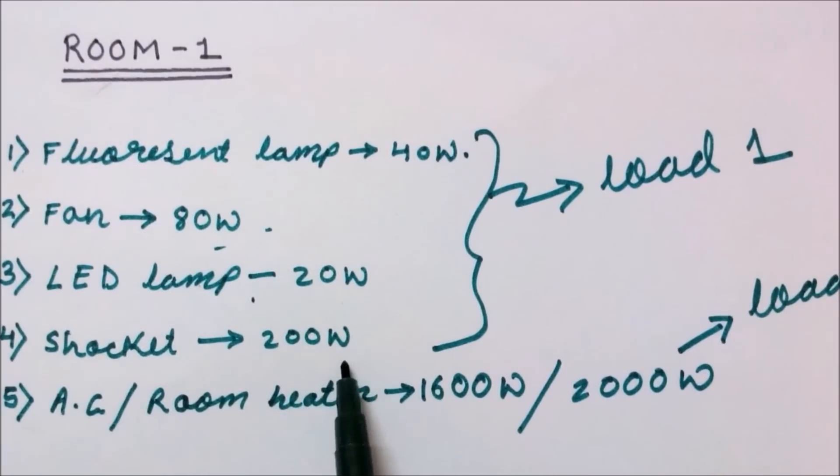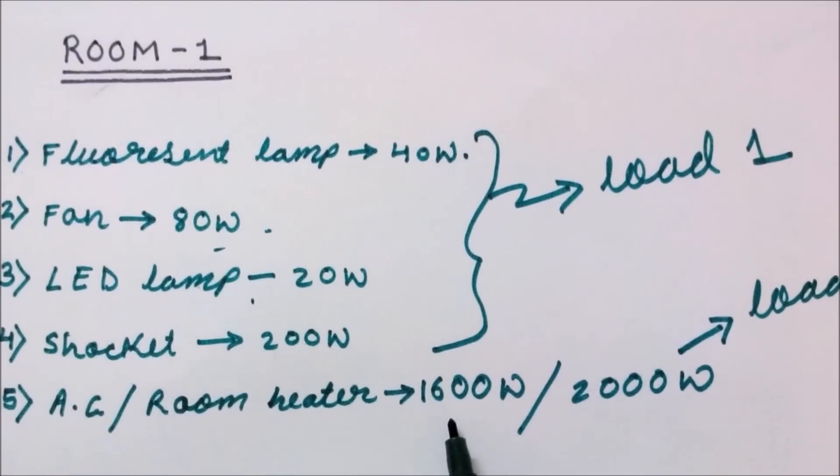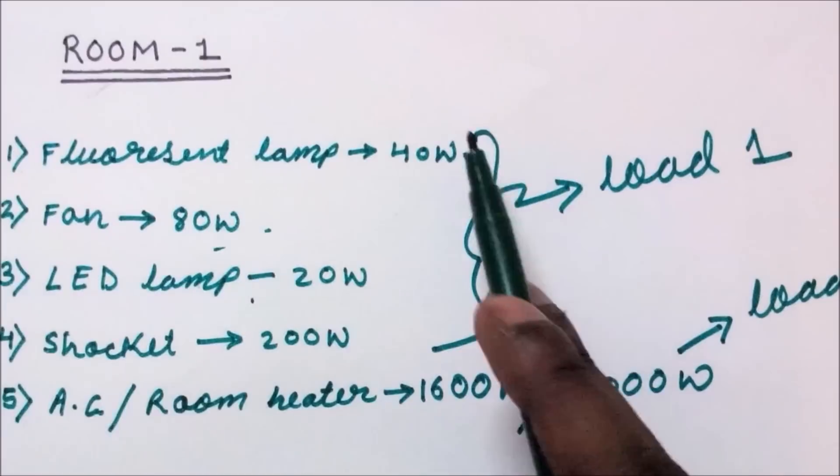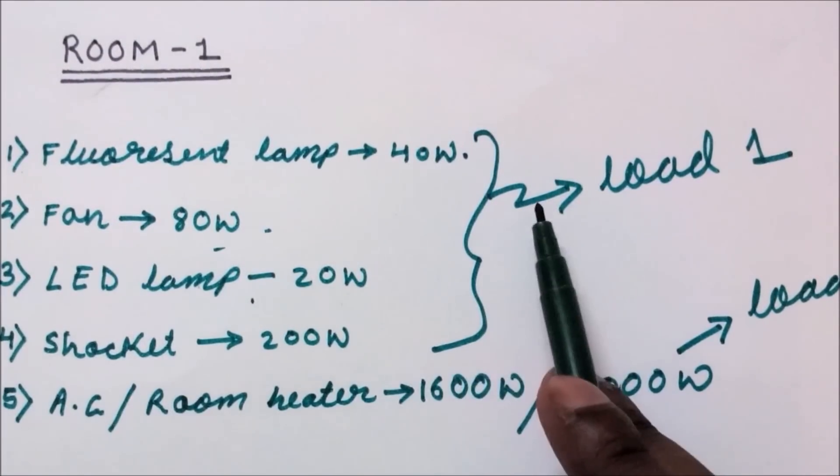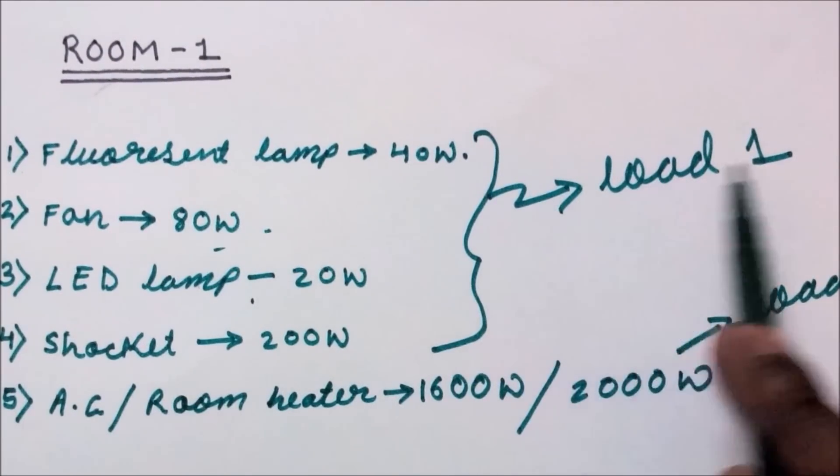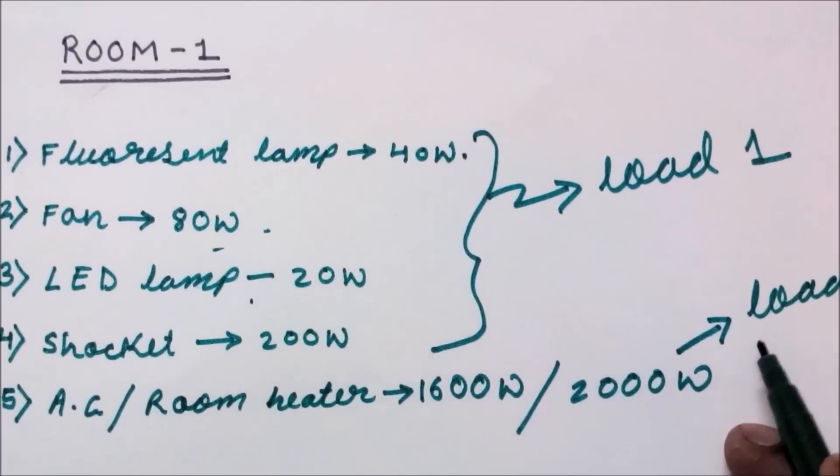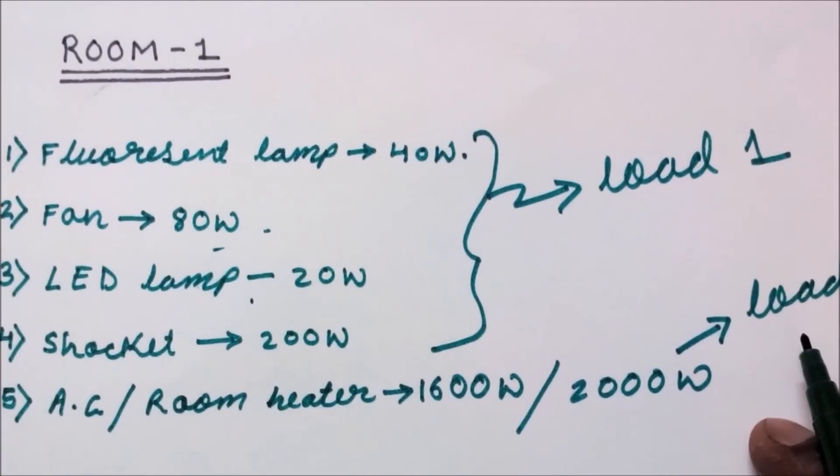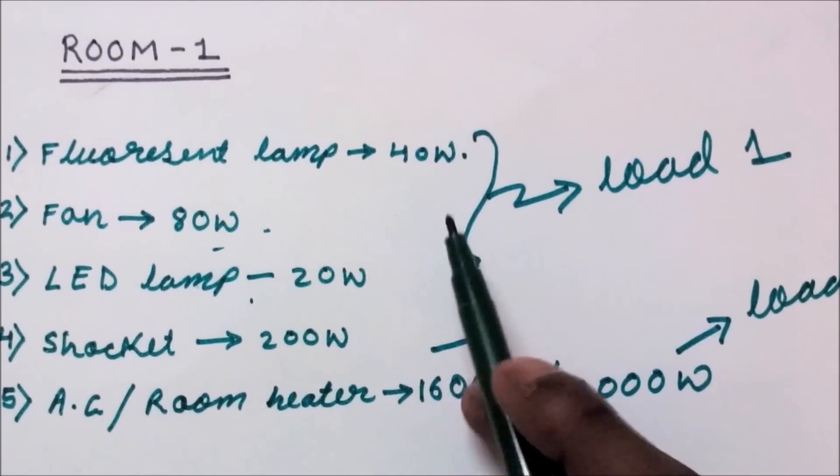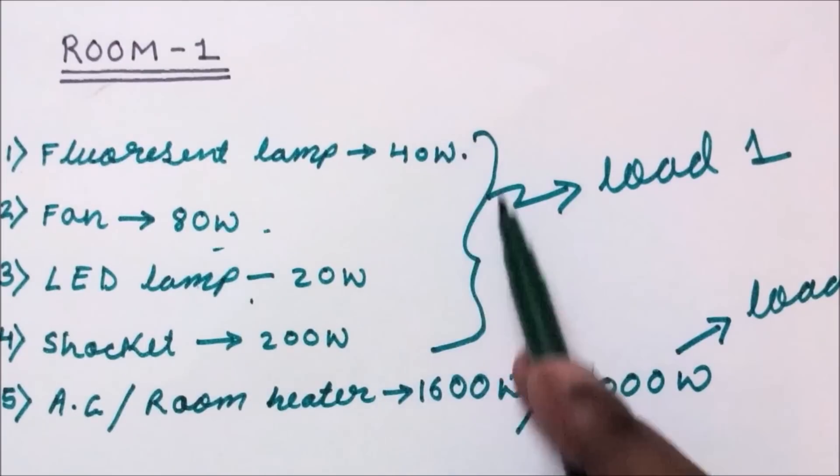which is 200W, AC and room heater 1600W and 2000W. This much of load I consider as load 1, and AC and room heater I consider load 2. Now I am going to add load 1.